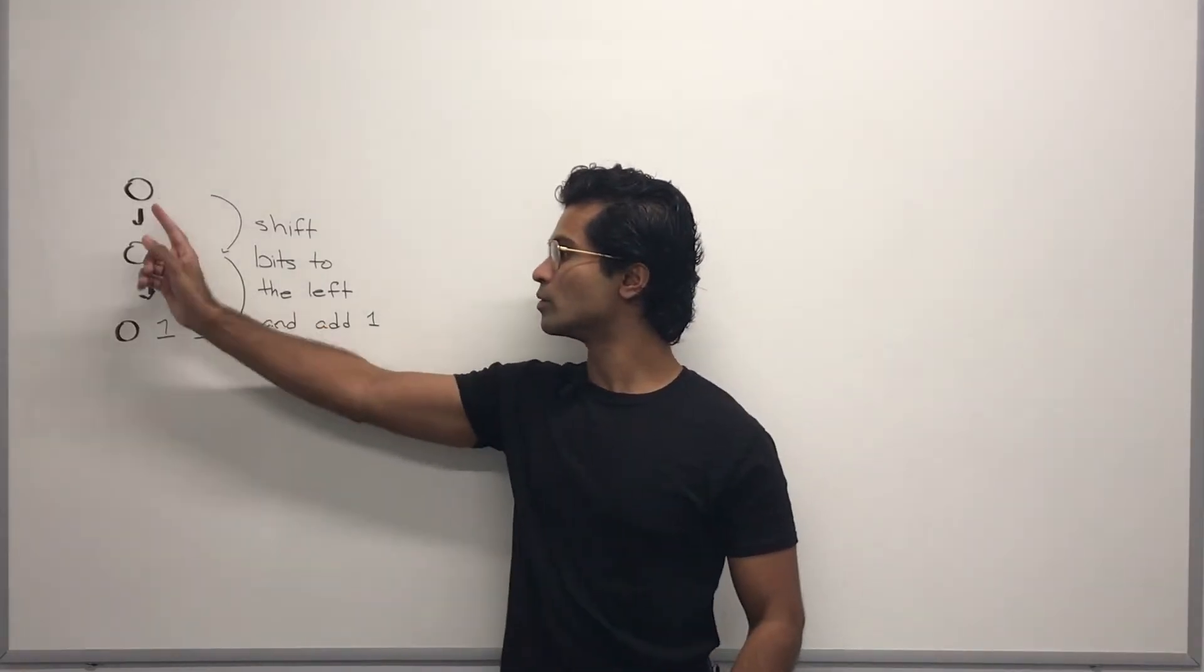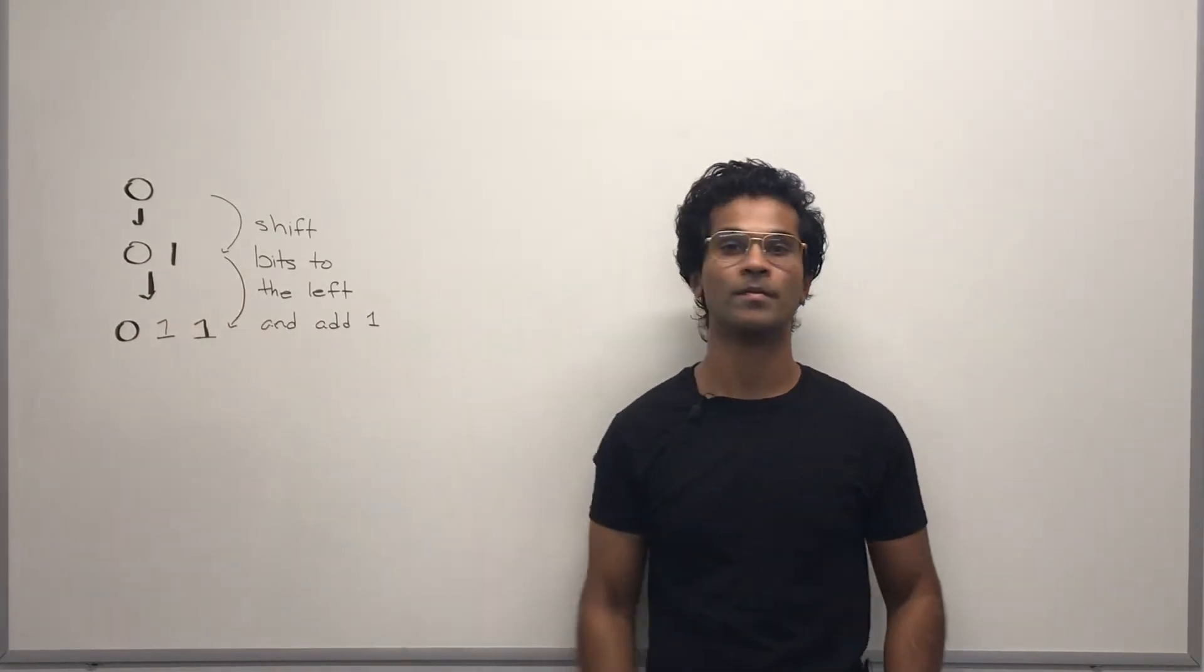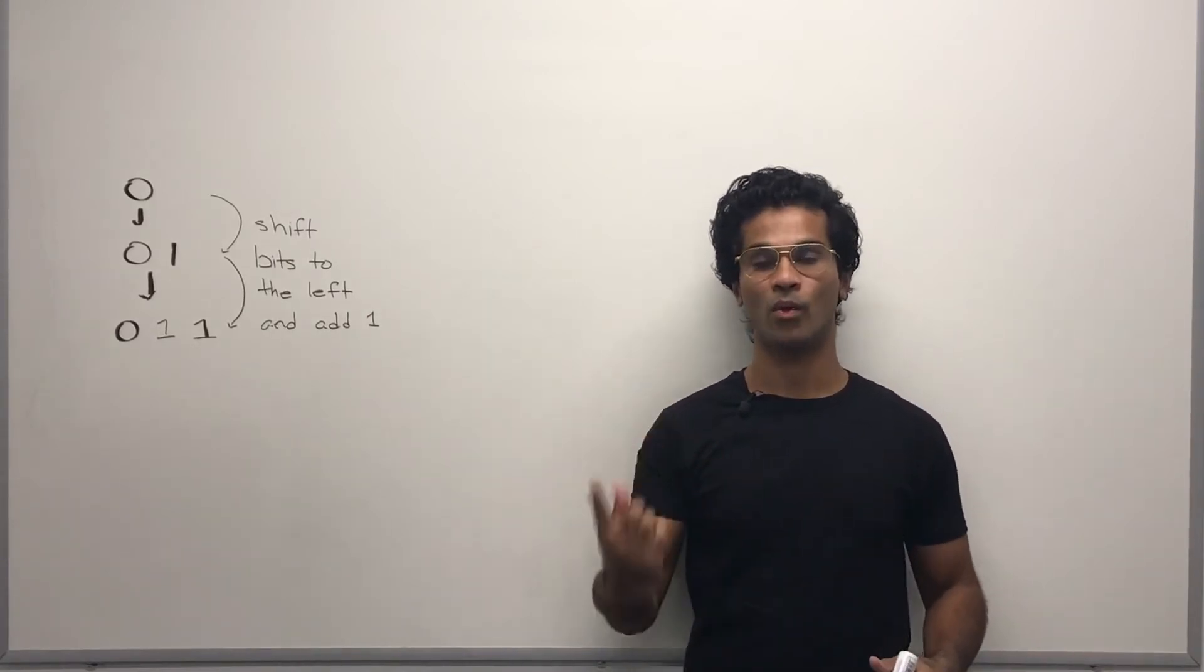How do we go from 0 to 0, 1 and go from 0, 1 to 0, 1, 1? All we do is take our bits and shift them to the left and add 1.